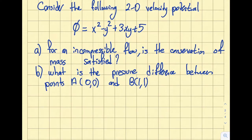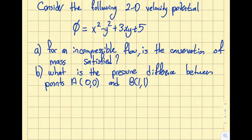Today I'm going to solve a comprehensive example that includes velocity potential, conservation of mass, and pressure difference between two points, which can be calculated by Euler's equation or Bernoulli's equation. Consider the following 2D velocity potential given for an incompressible flow: (a) is the conservation of mass satisfied, and (b) what is the pressure difference between points A(0,0) and B(1,1)?